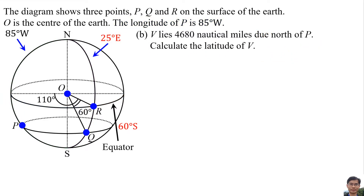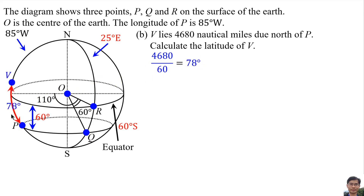B lies 4680 nautical miles due north of P, so the vertical distance needs to be converted from nautical miles into degrees by dividing by 60, giving 78 degrees. This means the difference in latitude between V and P is 78 degrees. The difference in latitude from the equator to point P and point Q is 60 degrees, so the latitude of V is 78 degrees minus 60 degrees north, giving the latitude of V as 18 degrees north.